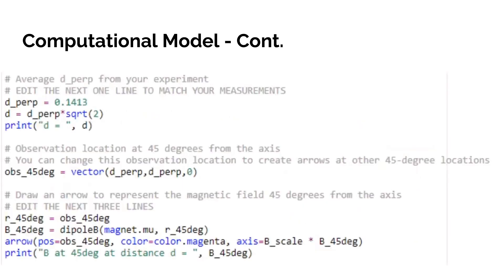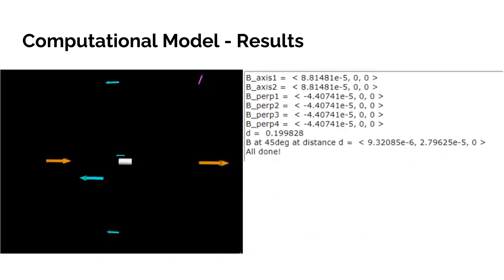Here we're calculating the off-axis magnitude of the magnetic field and placing an arrow to visualize and represent it. Our computational model with our values and visual component is shown on the left.